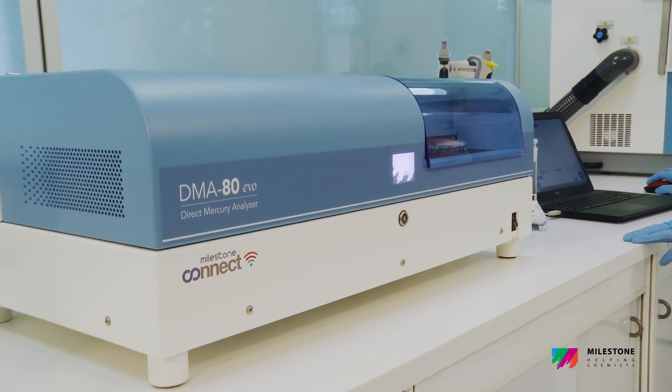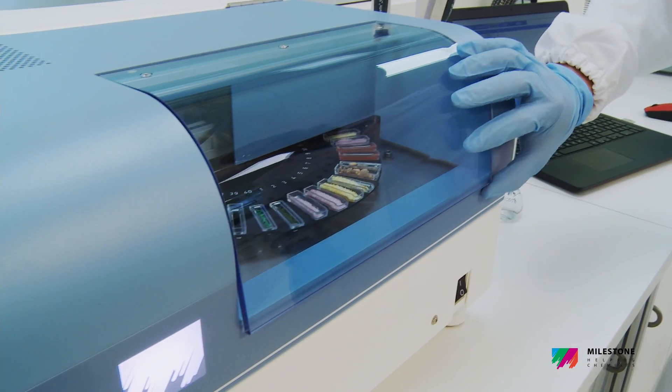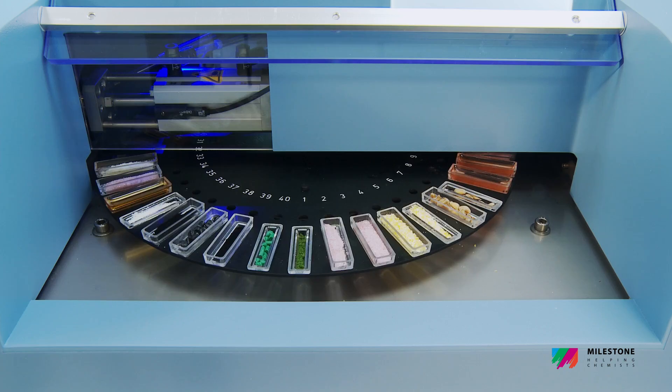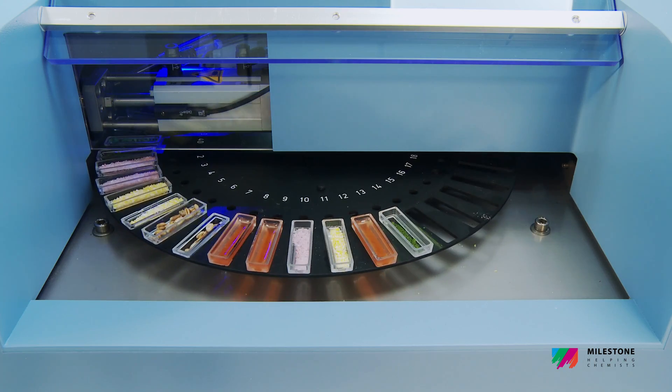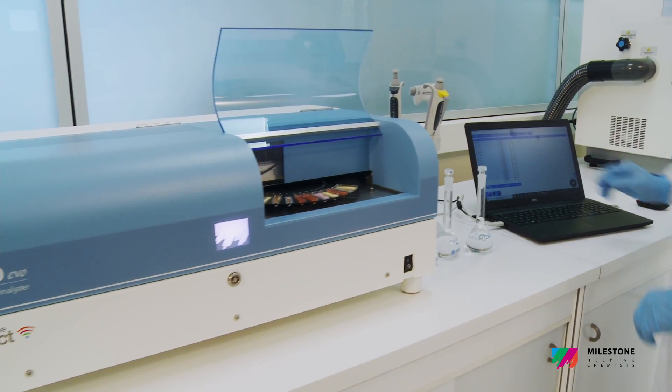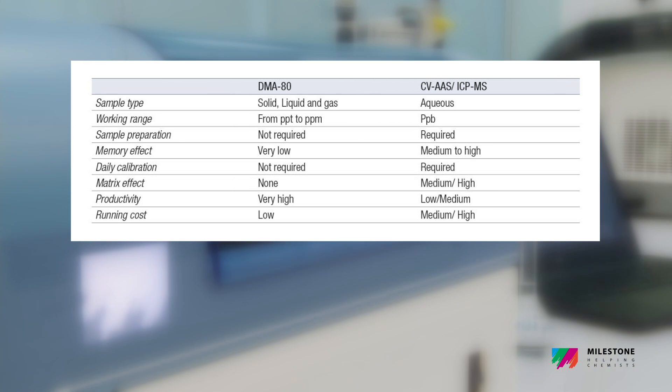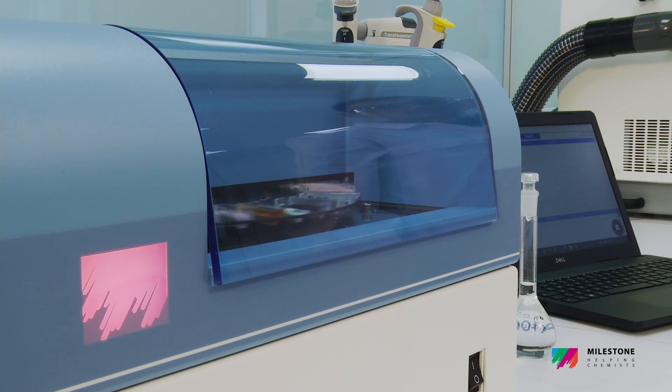The DMA80 EVO incorporates all our experience and knowledge. Traditional techniques for the determination of mercury, such as cold vapor or even the latest ICP-MS models, require sample preparation, chemicals, time-consuming calibration, and can often lead to memory effects and long cleaning cycles.